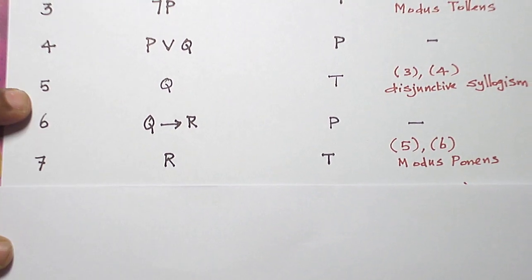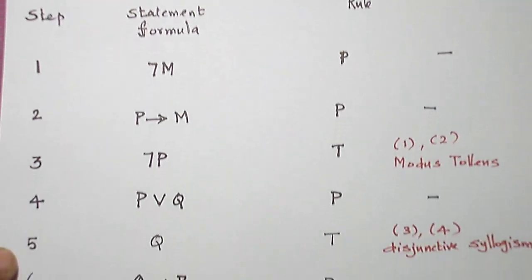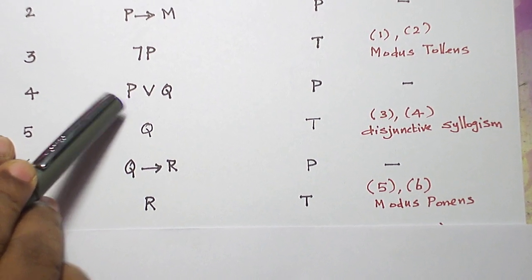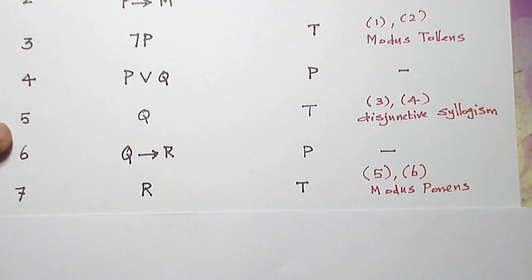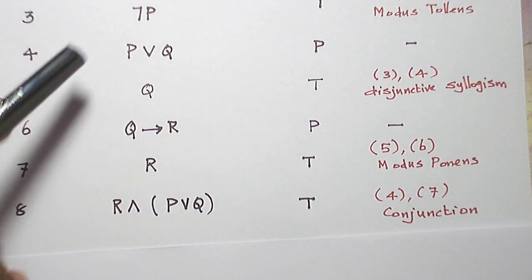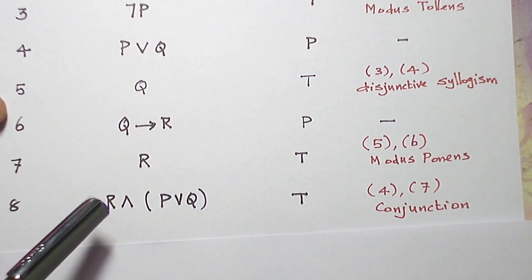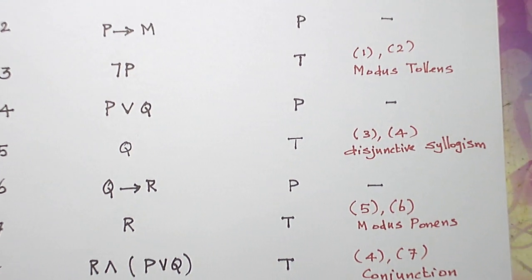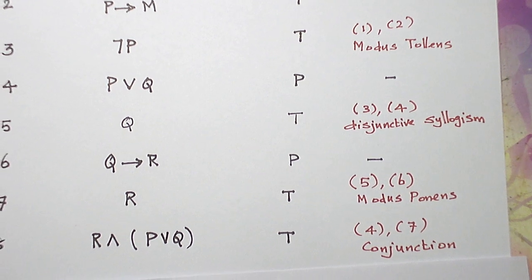Now our conclusion is R and P∨Q. We have derived R in step seven, and P∨Q was already introduced as a statement formula in step four. Combining these two using conjunction gives R and P∨Q as our final derivation. This is exactly what we were supposed to prove, so our proof is complete. Next video, let us see another problem. Thank you.